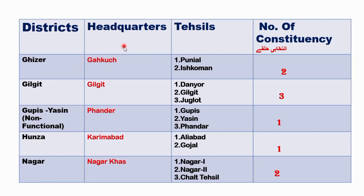The headquarters of Ghizer is Ghakuch. The headquarters of Gilgit is Gilgit city. The headquarters of Gupis-Yasin is Fandar. The headquarters of Hunza is Karimabad. And the headquarters of Nagar is Nagar Khas.